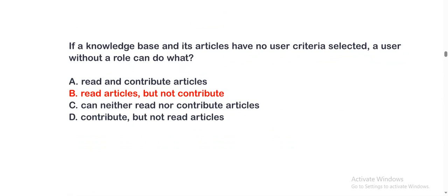Next question: If a knowledge base and its articles have no user criteria selected, a user without a role can do what? The options are: option A, read and contribute articles; option B, read articles but not contribute; option C, can neither read nor contribute articles; option D, contribute but not read articles. The correct option is option B.